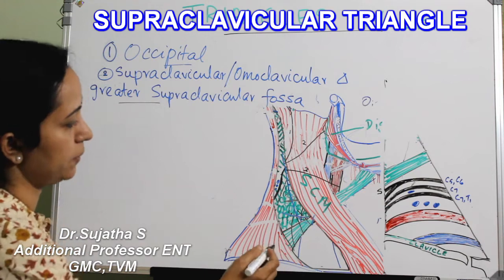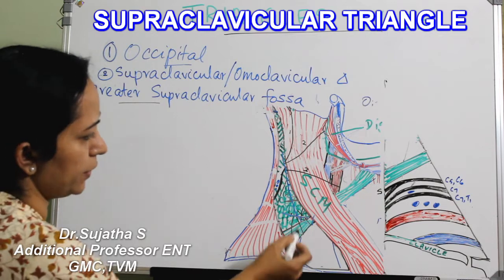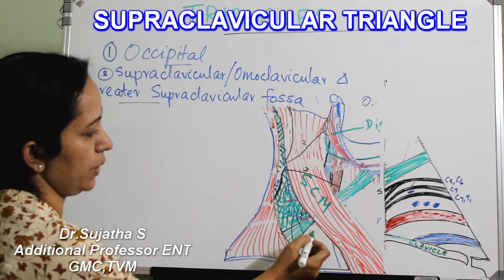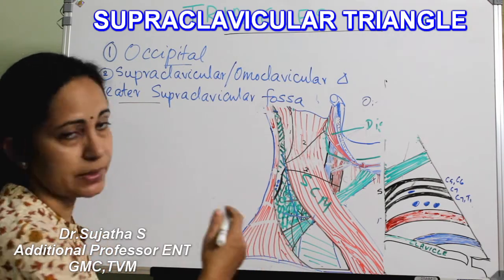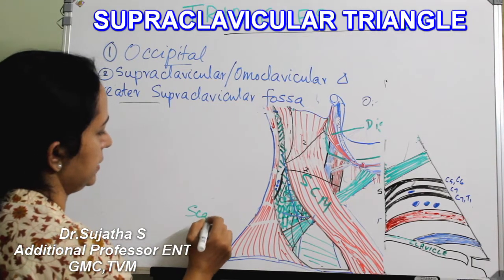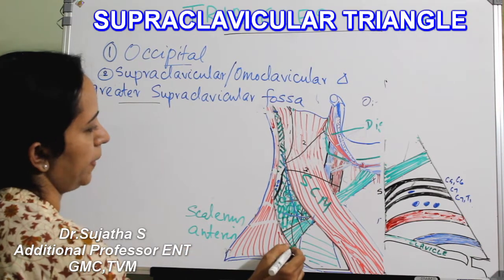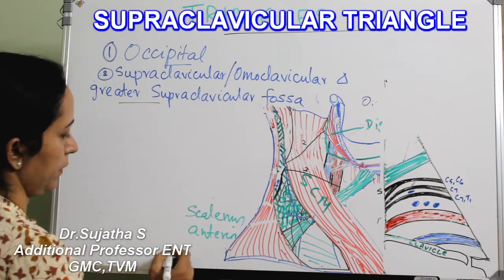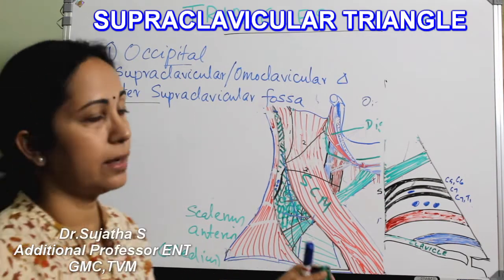The floor is formed by muscles — specifically scalenus medius and scalenus anterior. A part of scalenus medius comes down from the occipital triangle, and along with scalenus anterior, these muscles form the floor of the supraclavicular triangle. The contents are important.